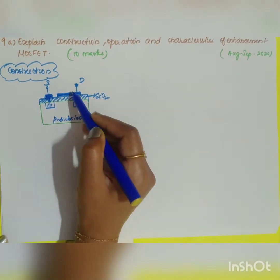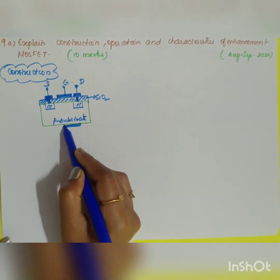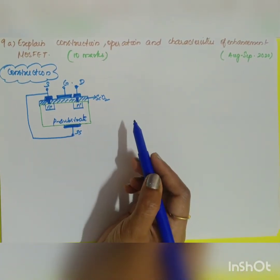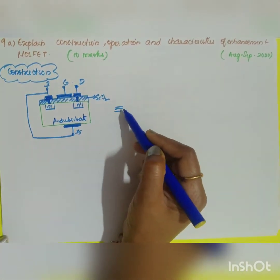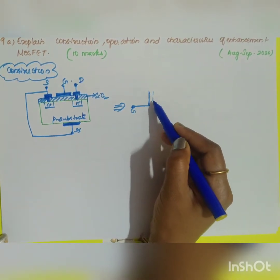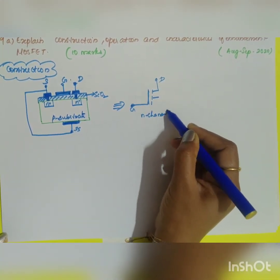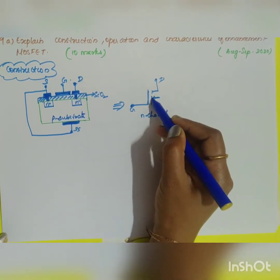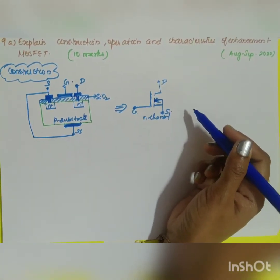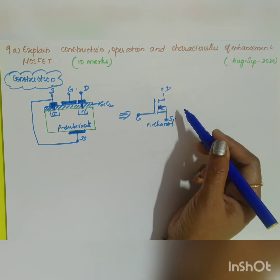One n-type semiconductor is taken as the source and the other as the drain. The middle contact is the gate. It has three terminals: gate, drain, and source. The substrate connection is connected to the source. For the symbol of the n-channel enhancement MOSFET, the arrow points towards the right. The opposite applies for p-channel enhancement MOSFET.